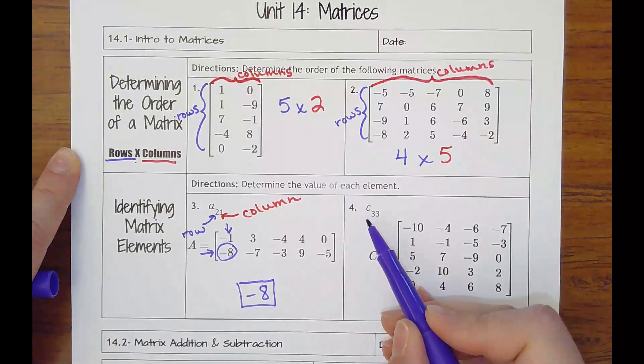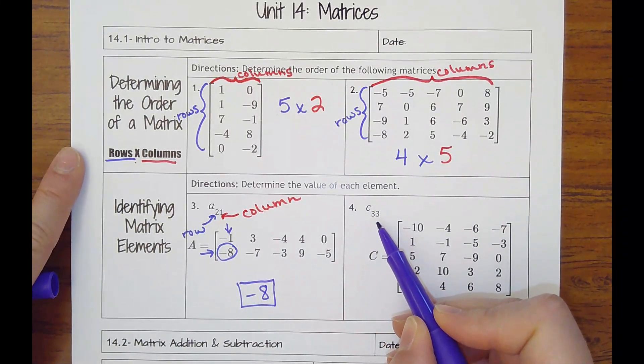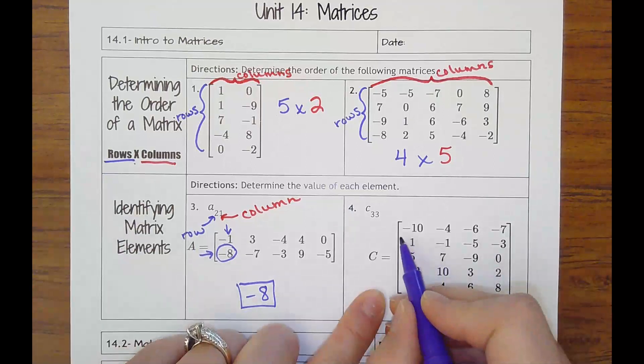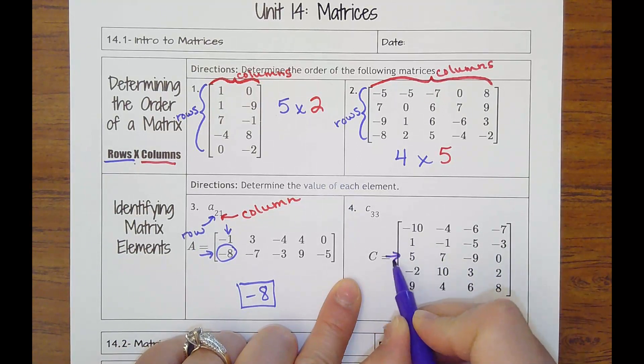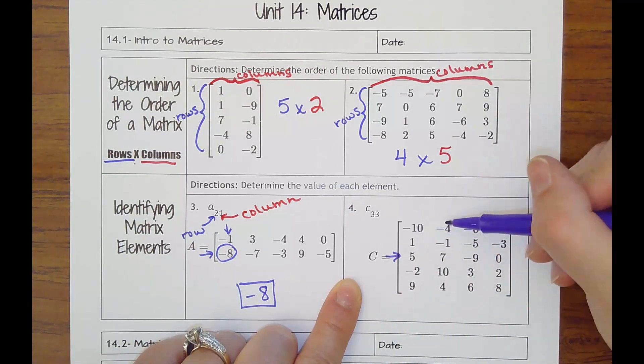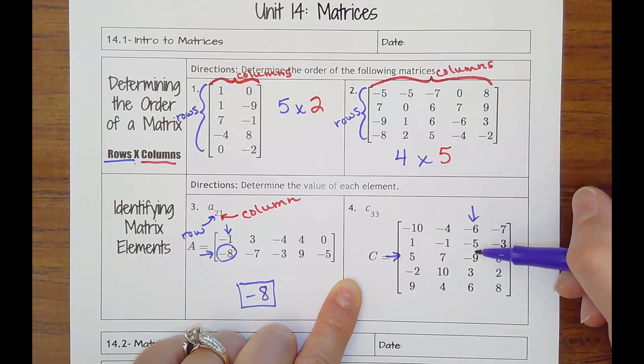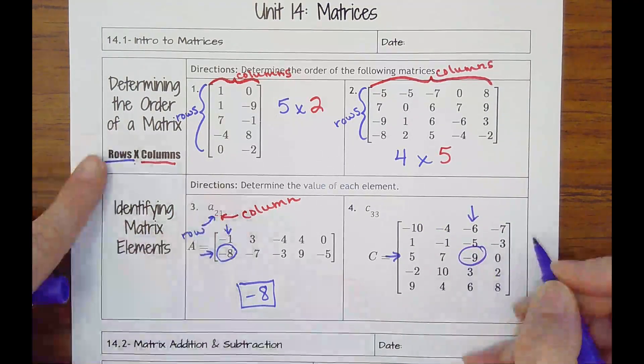And then number four says find element C₃₃. So that's row three, so I'd go one, two, three, column three, one, two, three. So that puts me here—negative nine.